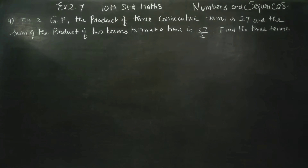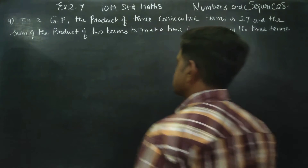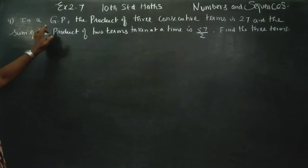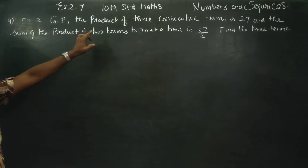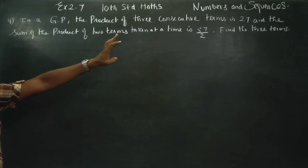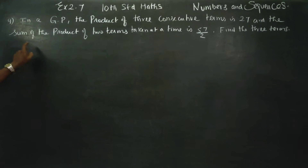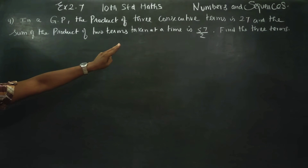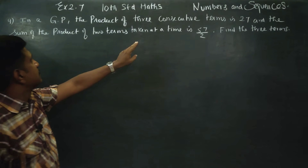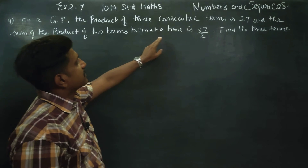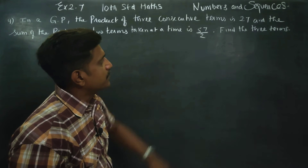Hello 10 standard students, I am Karanagaran. In chapter number 2, numbers and sequences, sum number 9. In a geometric progression, the product of 3 consecutive terms is 27, and the sum of the product of 2 terms taken at a time is 57 by 2.